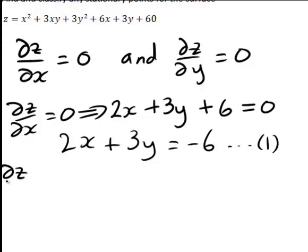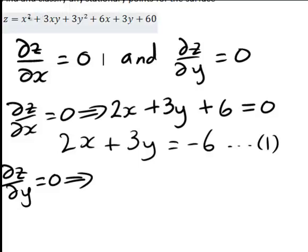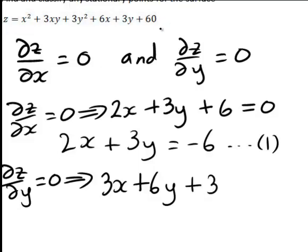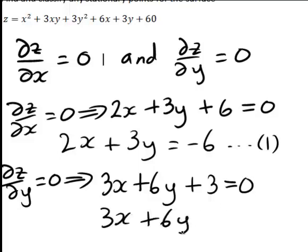Similarly, let's work out what happens if ∂z/∂y is equal to zero. Treating x as a constant, the x² term differentiates to zero, 3xy becomes 3x, 3y² differentiates to 6y, 6x goes to zero, 3y differentiates to 3, and the constant 60 differentiates to zero. Hence ∂z/∂y equals zero implies 3x plus 6y plus 3 equals zero, or rearranging, 3x plus 6y equals negative 3. We'll call that equation two.